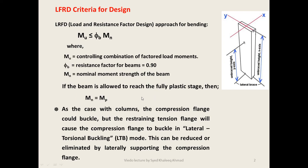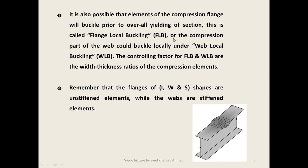As with columns, the compression flange could buckle, but the restraining tension flange causes the compression flange to buckle in lateral torsional buckling. This can be reduced or eliminated by laterally supporting the compression flange. It is also possible that elements of the compression flange will buckle prior to overall yielding of the section — this is called flange local buckling (FLB).